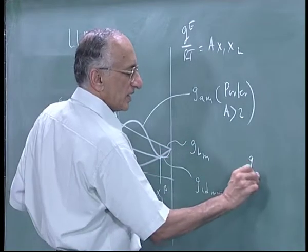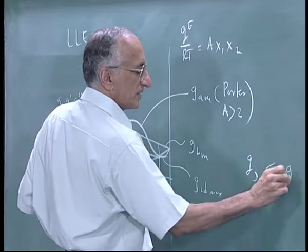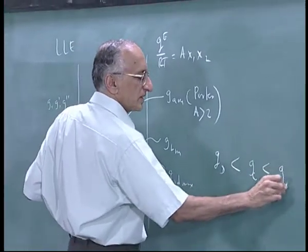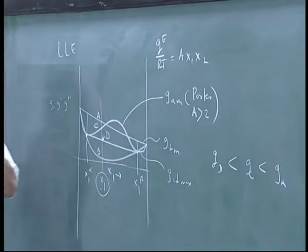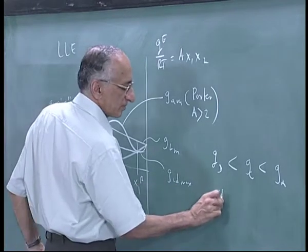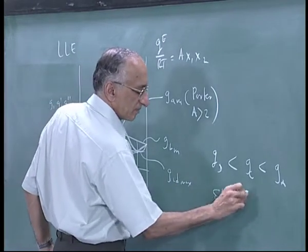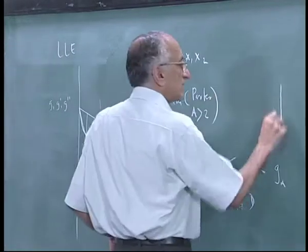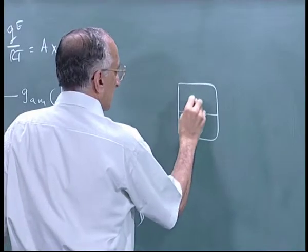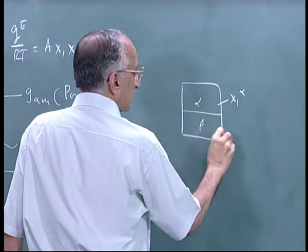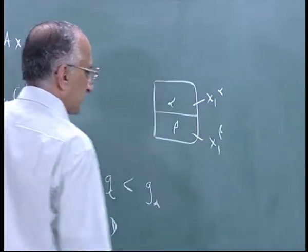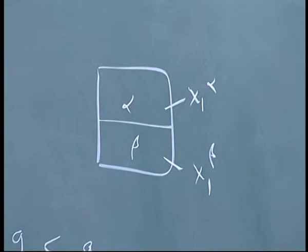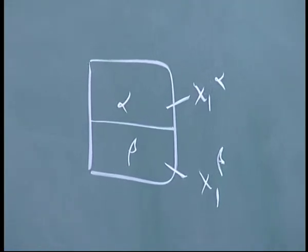So you will have to say G at D is less than G at A. Therefore, the equilibrium point is D. So what you then have is alpha and beta, this is x1 alpha, this is x1 beta and the extent of the two phases, the amount of alpha phase present and the amount of beta phase present is going to depend on mass balance, what you start with.